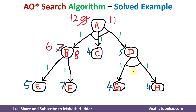So we now explore the right-hand path CD, whose cost is already known as 11. For C, nothing needs to be calculated as it is the last node. But to solve D, we need to solve both G and H, because there is an AND. The cost is 1+4+1+4 = 10. This is the new heuristic value of D, so the previous heuristic value of 5 is replaced with 10.